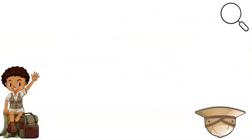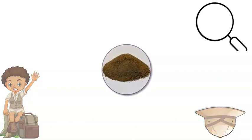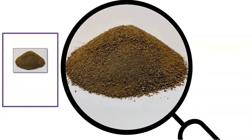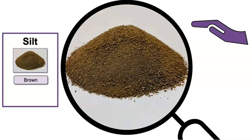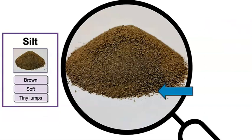Let's try another sample. This land sample looks different from the last one. This sample is called silt. What color is the silt? Did you say it's brown? Imagine you touch the silt. What do you think the silt feels like? I think it might feel soft, but I do see some tiny lumps right here.